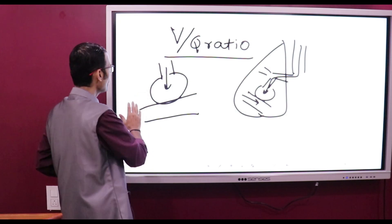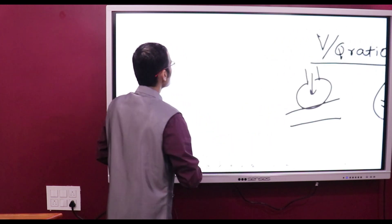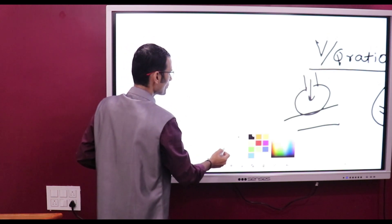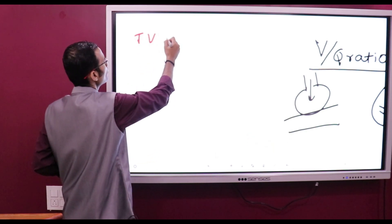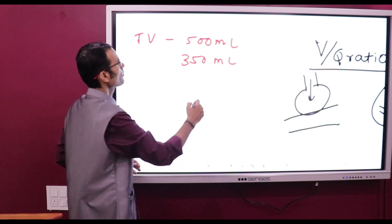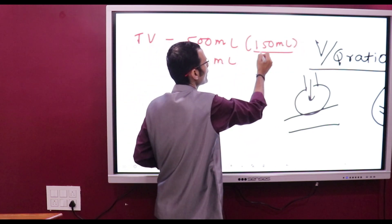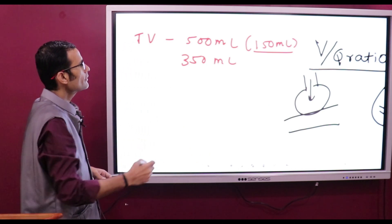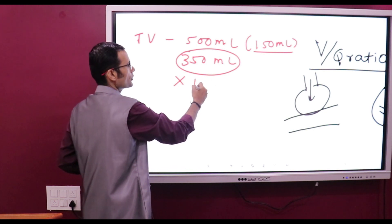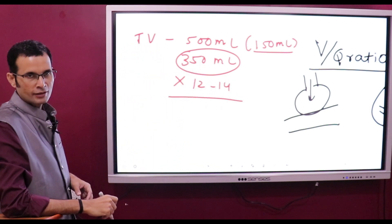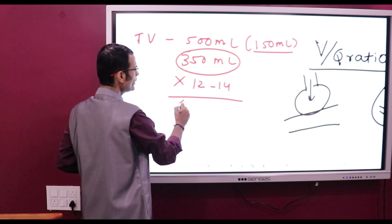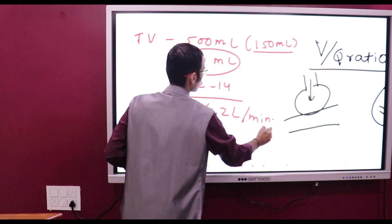Before understanding this ratio, let's understand alveolar ventilation per minute. We inspire 500 ml of air, called the tidal volume. Out of this, roughly 350 ml reaches the alveoli, because 150 ml stays in the dead space and never reaches the alveoli. If we take 12 to 14 such breaths per minute, the alveolar ventilation is roughly 4 to 4.2 liters per minute.